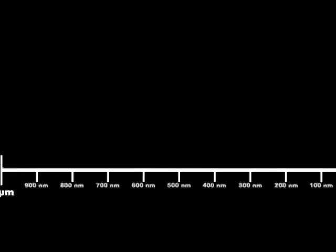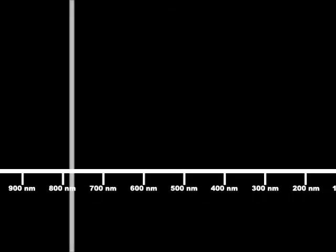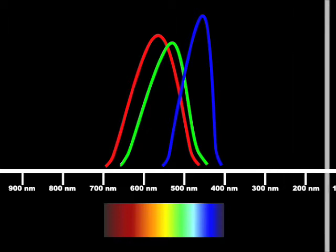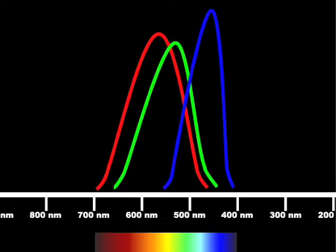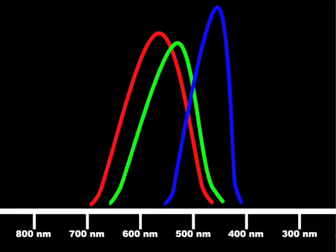But we're not actually sensitive to all the colors equally. We see green light a lot better because it also triggers a little bit of the red and the blue cones. And since cones are sensitive over a range of wavelengths, it's hard for us to know exactly what wavelengths we're looking at.